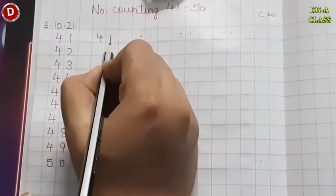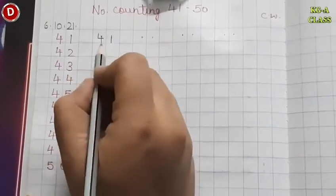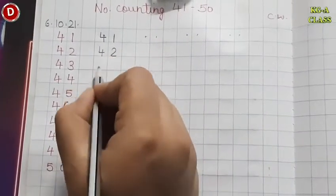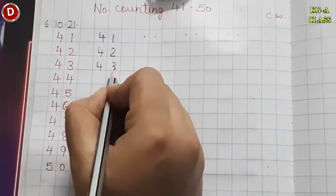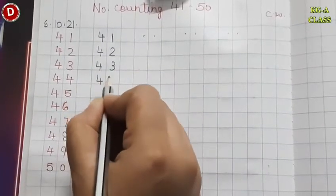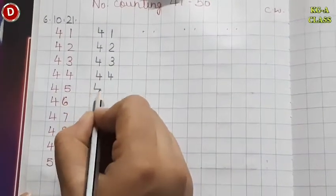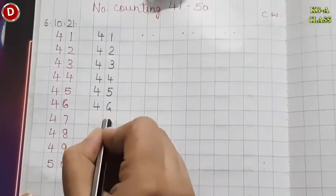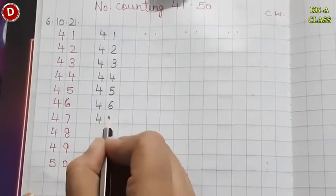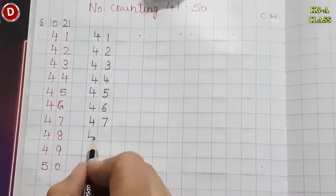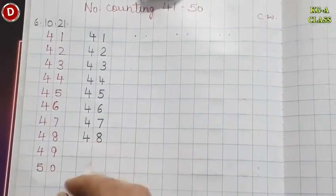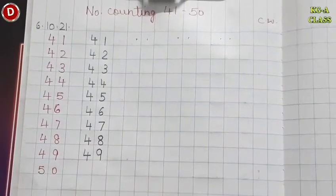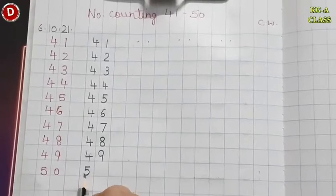So: 4, 1 — 41 right on the blue line. Then 4, 2 — 42. 4, 3 — 43. 4, 4 — 44. 4, 5 — 45. 4, 6 — 46. 4, 7 — 47. 4, 8 — 48. 4, 9 — 49. And then comes 50.